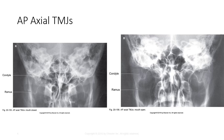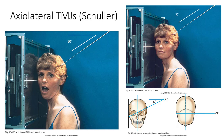For the axial lateral TMJs or Schuller method, the patient can be positioned semi-prone or seated upright. One exposure is made with the mouth closed and, if possible, another with the mouth open. Start with the patient's head lateral to the image receptor, centering at a point 1.5 inches anterior to the EAM and to the IR — in other words, the TMJ of interest — and rest the patient's cheek against the grid device.